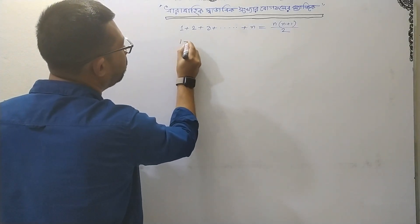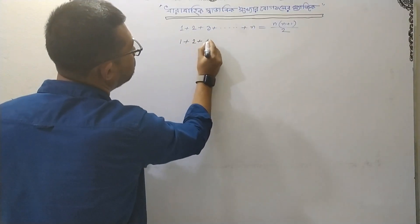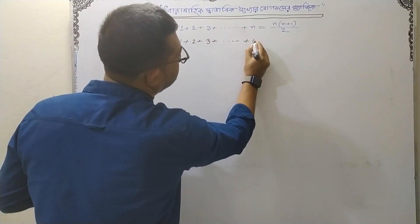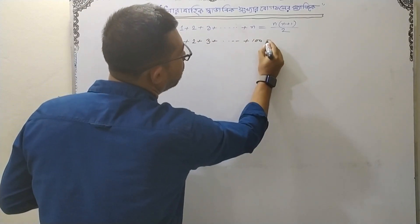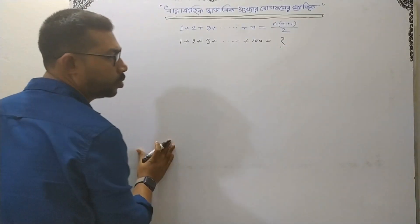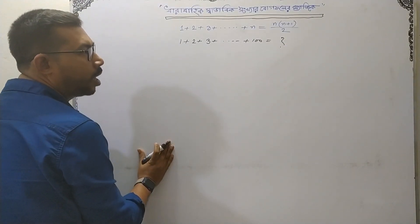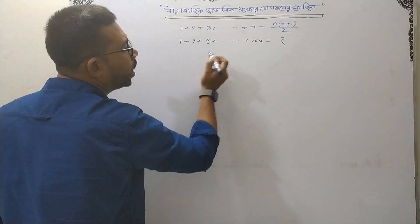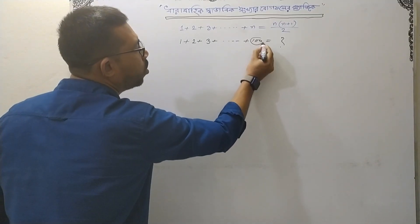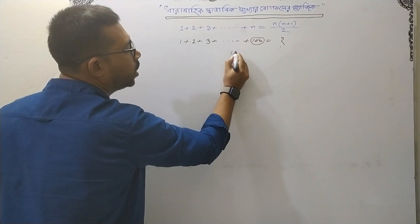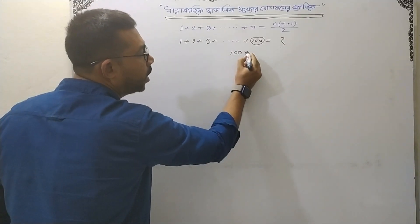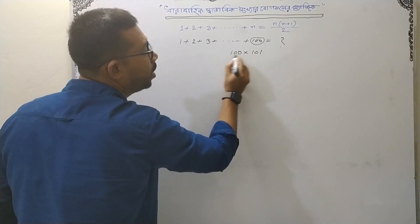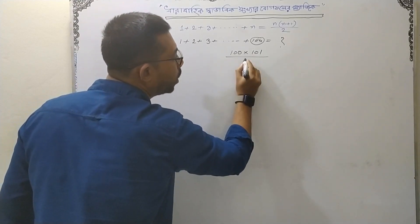1 plus 2 plus 3 plus dot dot dot plus 100. There is a proof — we will write a proof. We will write a proof. When the proof is written in this manner, we will write a proof in this letter.